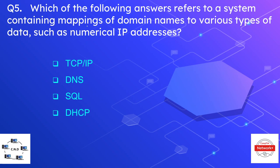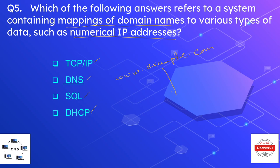Question number five is: which of the following answers refers to a system containing mappings of domain names to various types of data such as numerical IP addresses? The options are TCP/IP, DNS, SQL, and DHCP. The correct option is DNS, or Domain Name System. DNS is used to map a domain name such as www.example.com to an IP address, for example 192.168.10.100.